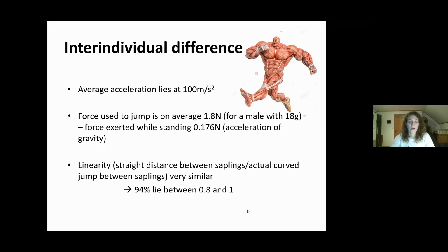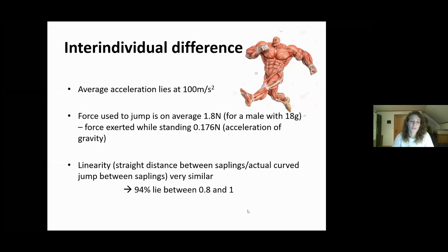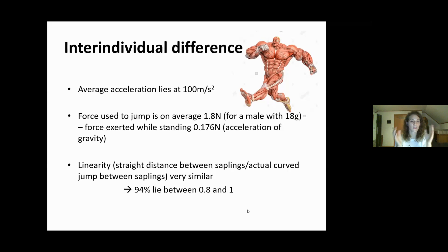From velocity we could also calculate the acceleration, and on average it lies around 100 meters per second squared. They're quite fast, and the force that an average manakin of 18 grams needs is 1.8 Newtons. To compare, while they're standing on a branch it's only 0.167 Newtons — so they really have quite a lot of force when they chomp off. Another parameter we included is linearity: the ratio between the straight line between the two saplings and the actual curve of the chomp. This also accounts for different sapling distances in the arenas, and 94% of values lie between 0.8 and 1, meaning the chomps are very similar across displays.